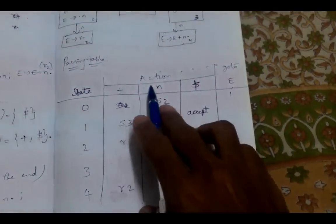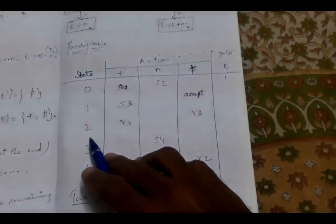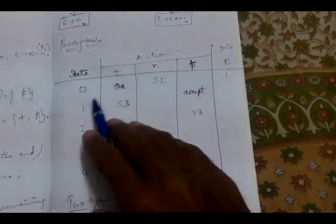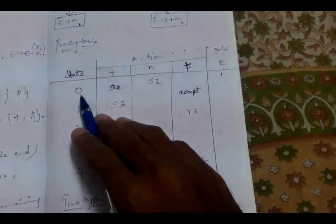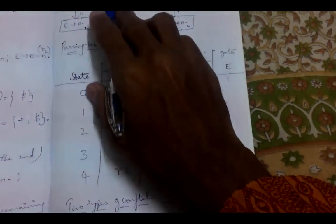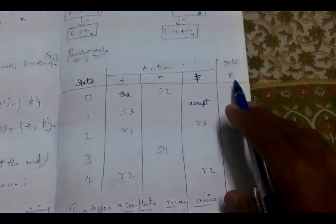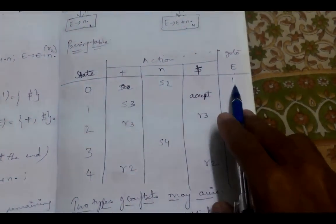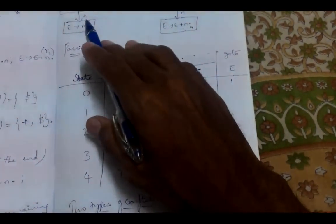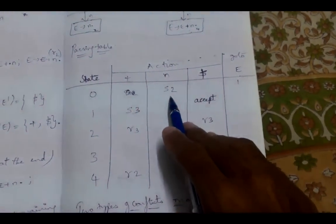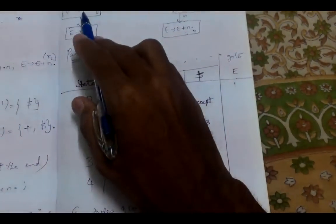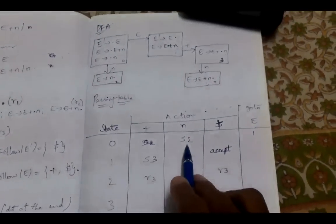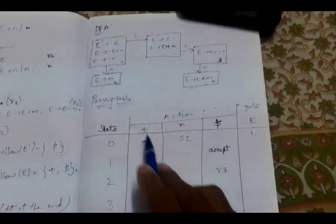Now we create the parsing table, which has three parts: State, Action, and Goto. State represents all states in the DFA. Action represents all terminals in the grammar. Goto represents the non-terminals. For State 0, input E goes to State 1, so in the Goto column for E we write 1. For State 0 on input N, we write S2, meaning we perform a shift operation and go to State 2.